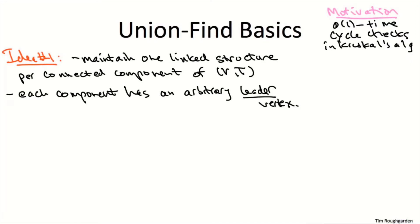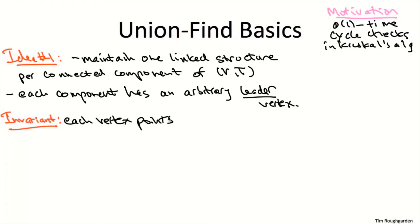So what is the point of these extra pointers at each vertex, and what is the point of having these leaders? A key invariant that we're going to maintain is that a given vertex with its extra pointer points to the leader vertex of its connected component.